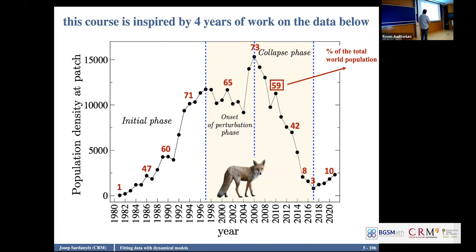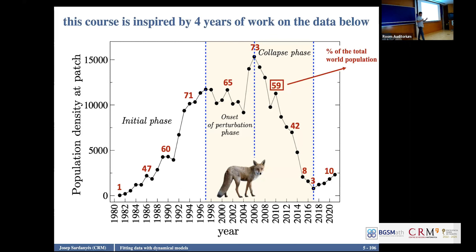You will see that we used a function to model this social copying effect: the less individuals, the more prone I will be to leave. For the initial phase, if you have some experience in modeling, the first thing we said is this is exponential growth. And probably the population was starting to arrive at a saturation — carrying capacity or something below the carrying capacity.